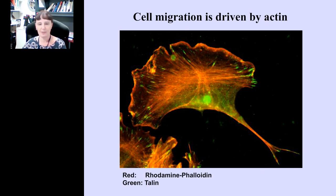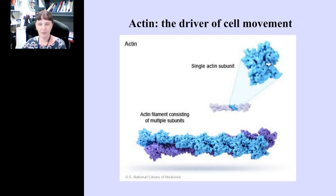You can see that the actin cytoskeleton covers the entire cell and forms different types of structures. Towards the cell center, it forms thick cables called stress fibers, which mediate large-scale contractions. In addition, actin also forms a dense network at the very cell periphery, highlighting the ruffling cell edge. This dense network at the cell periphery is the one that drives migration and protrusion of the cell's leading edge. Actin itself is actually a relatively simple, small globular protein whose key property is its ability to polymerize.